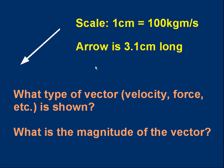Here's one for you to try. Suppose you've got a scale of one centimeter is 100 kilogram meters per second, and you've got an arrow someone's drawn. It's 3.1 centimeters long. First of all, can you say what sort of vector it is? What type of vector? Is it velocity or force or what sort of vector is it? And what is the magnitude of the vector? Pause the video if you want to, to try and answer that for yourself.